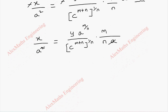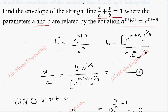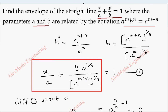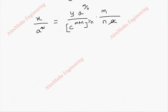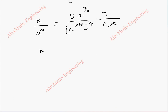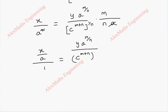Now we are going to use the ratio property. For that, I need the term exactly in this form so that I can replace it as 1. I need x/a and the second term. So this can be rewritten as (x/a) / 1, and the other term can be rewritten as [y · a^(m/n)] / [c^((m+n)/n)], then the whole division by n/m, because when m comes to the denominator it becomes n/m.